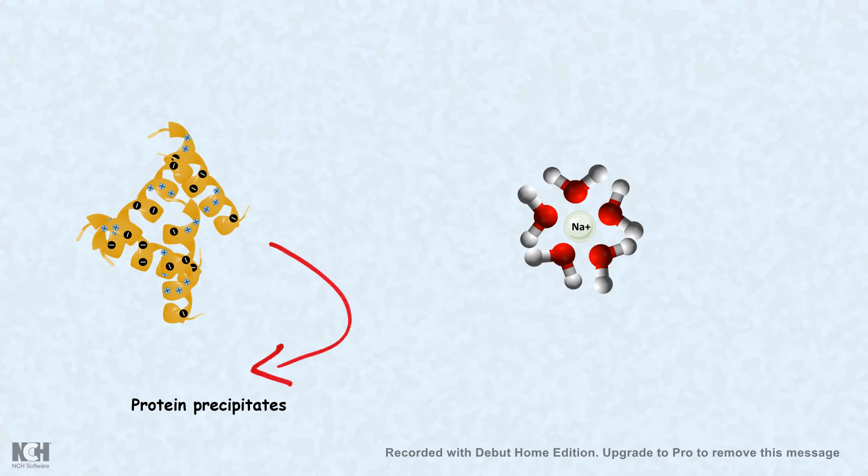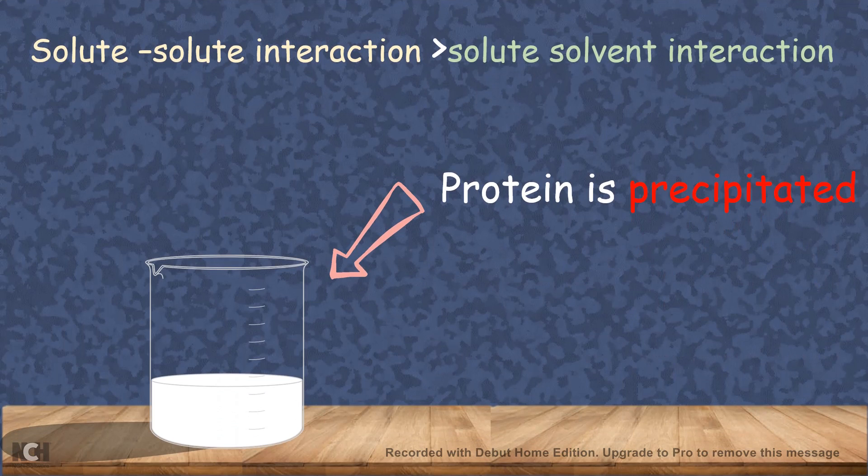So that is the concept behind salting in and salting out. In this situation, we are going to call it as salting out. And you can see the visible precipitate in the protein.